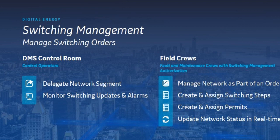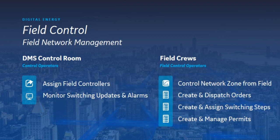The next module is switching management, where field crews are granted limited control of a network segment. A field person is given limited control of that segment and performs switching on it. It's a controlled handover from the control room — the field crews can request and accept control of those network segments, creating a back-and-forth transaction to track who's working on what. They can create and assign switching operations for crew members. This really pushes beyond the switching viewer and reporter toward full field control. We're seeing more and more of this from customers in Europe and Asia Pacific.